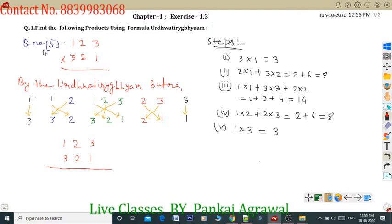You can see here, Question No. 5 I have written here. Multiply 123 by 321. By the Urdhva Tiryagbhyam Sutra, you can arrange the number. First number and second number like this.